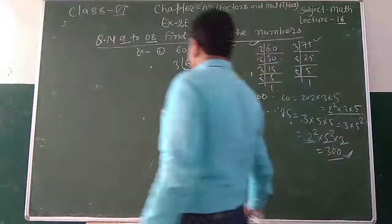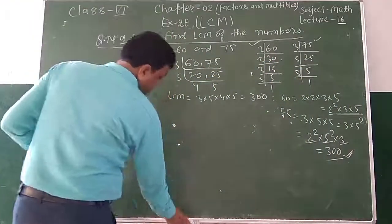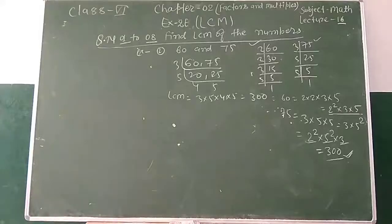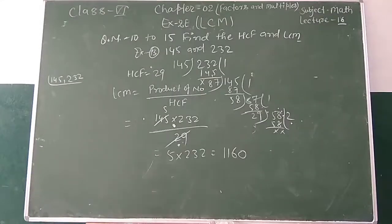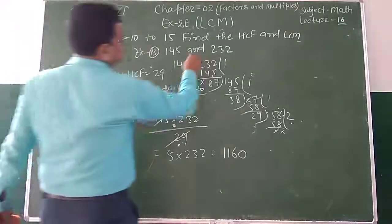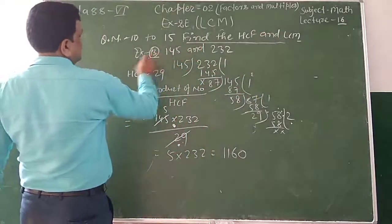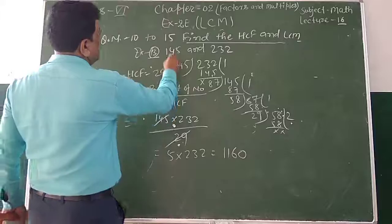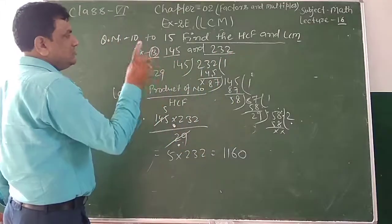This is the question number 1 to 8. Then it will be the question number 3 into 3 into 4 into 4 into the power 2. So, 10 to 15 points are HCF and LCM. In this example, there is a table number. There is 145 and 232. HCF and LCM are removed.